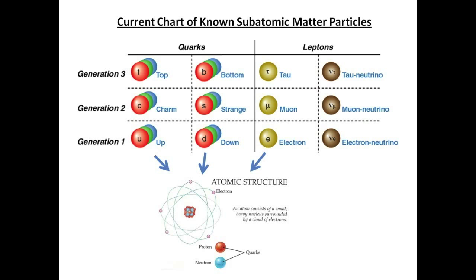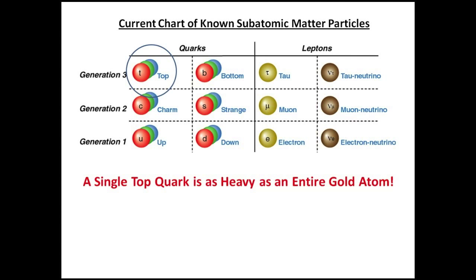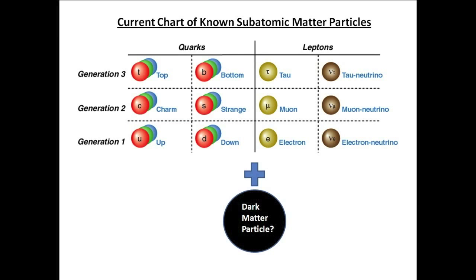All atoms are made up of up and down quarks and electrons. The top quark, discovered in 1995, is a single subatomic particle that weighs as much as a gold atom. Perhaps someday a dark matter particle will be added to this list.